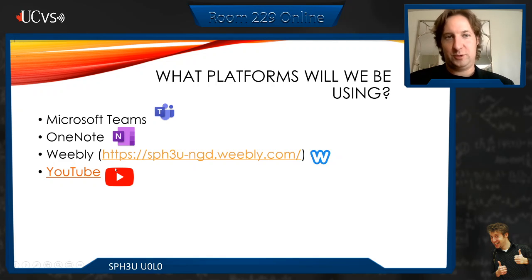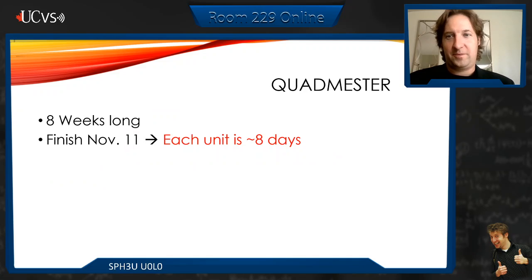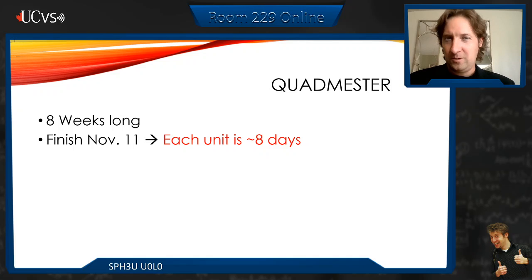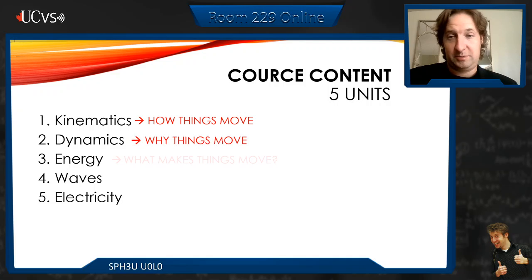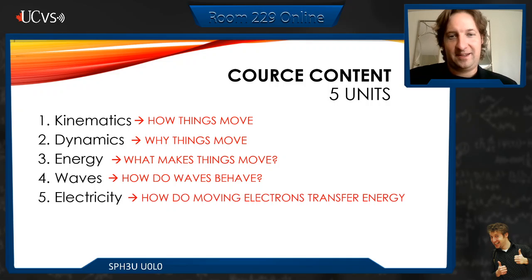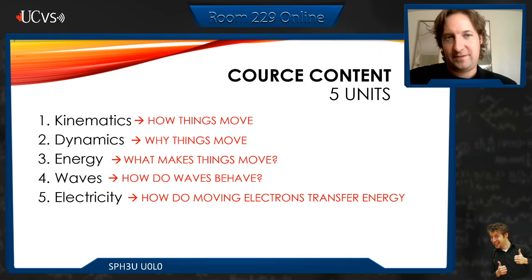Those are the platforms we're going to be using this quadmaster. Our quadmaster was supposed to be nine weeks, but because of delays in populating classes, it's a little shortened — we're finishing on November 11th. With five units that works out to about eight days per unit, so we might not get to Unit 5, but we'll do our best. The units are: kinematics, dynamics, energy, waves, and electricity. We'll talk about how things move, why things move, how waves behave, and how electrons transfer energy.